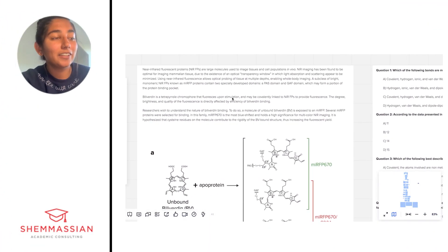The first paragraph reads: near infrared fluorescent proteins (NIRFPs) are large molecules used to image tissues and cell populations in vivo. NIR imaging has been found to be optimal for imaging mammalian tissue due to the existence of an optical transparency window in which light absorption and scattering appear to be minimized. I'm already noticing light absorption—that's causing me to remember things about waves and light.